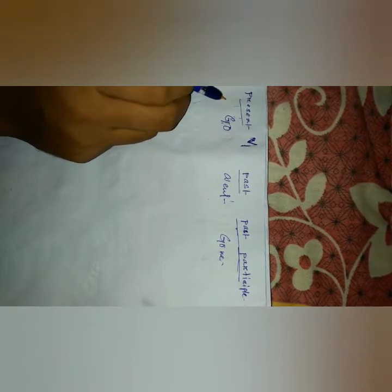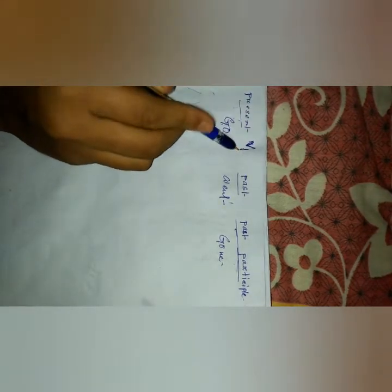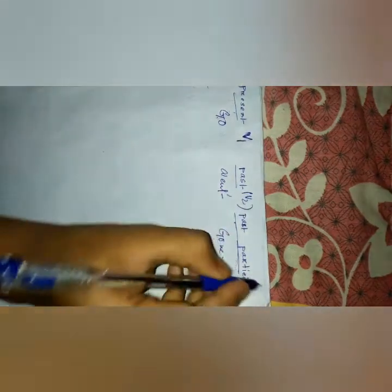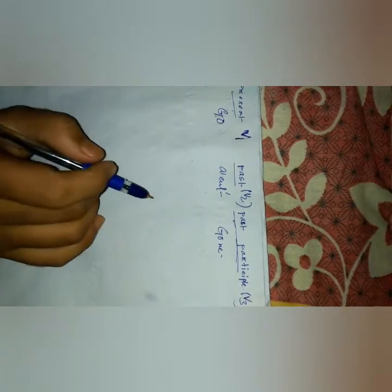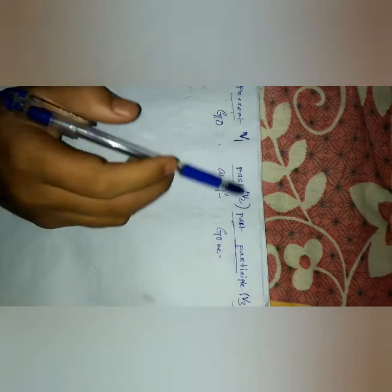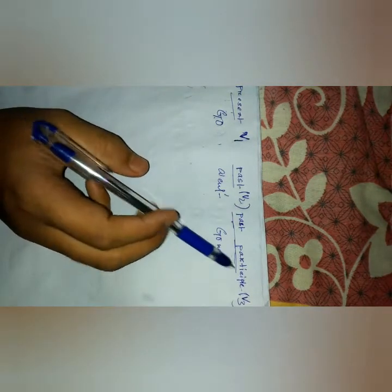Present form is 'have', past form is 'had', and past participle is P3. This is the basic structure: P1 is present, P2 is past, and P3 is past participle.